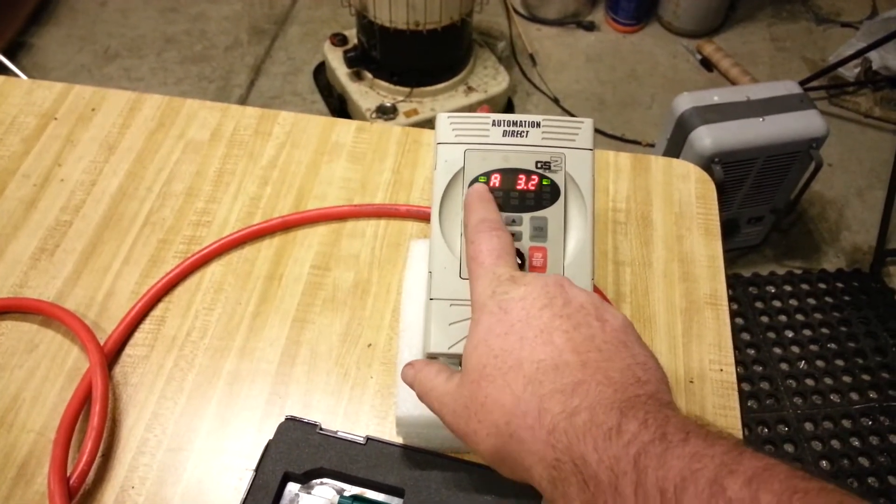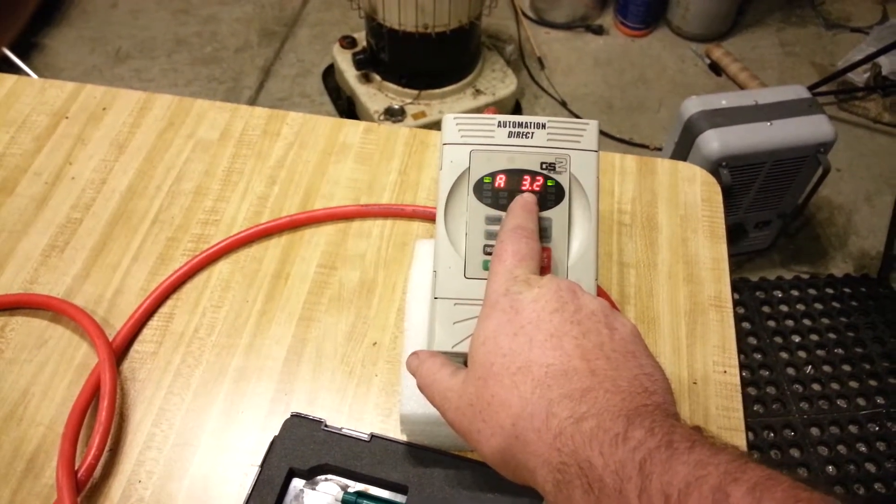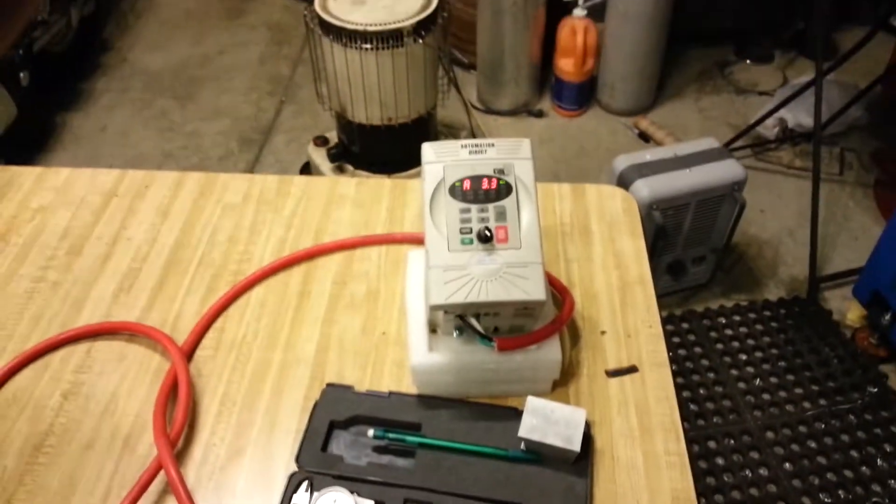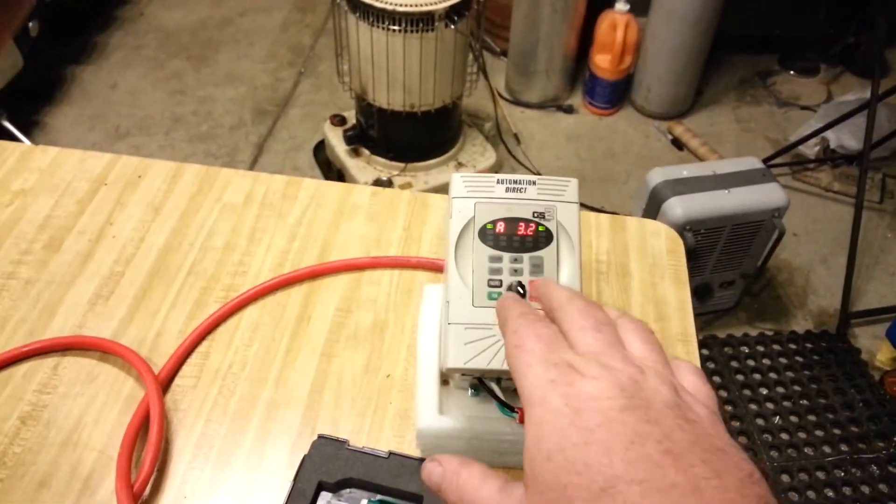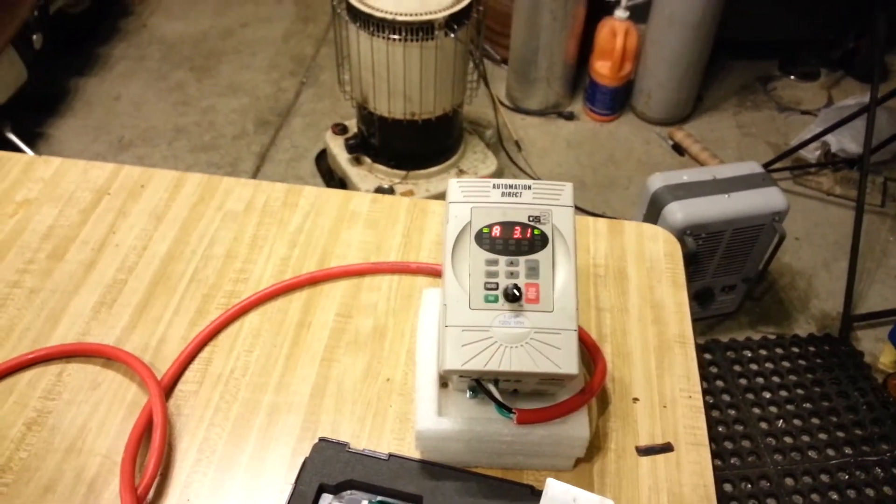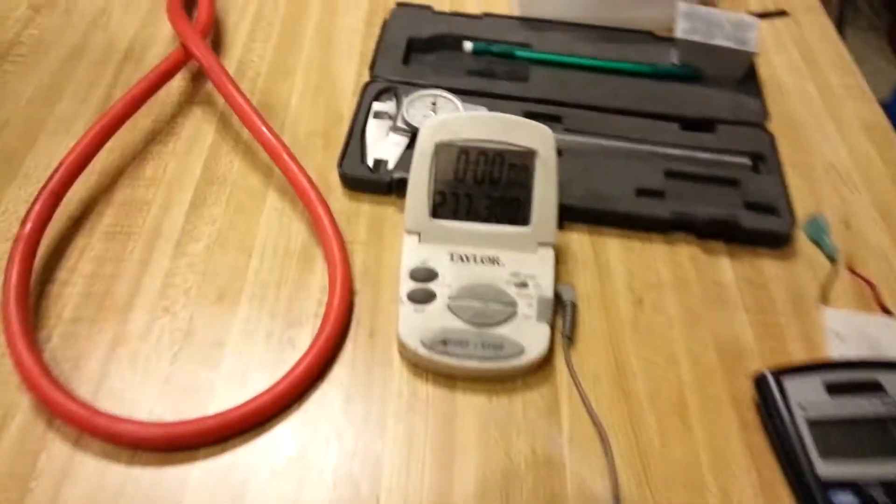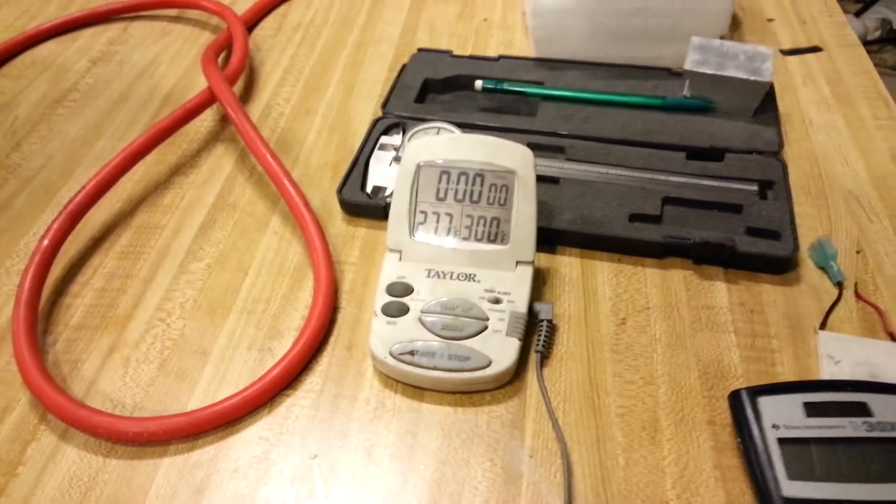Knocking the display down, the amperage is 3.2, 3.1, 3.3, jumping around a bit, but on average it's right around 3.2. Let's see if I can raise temperature again, 277.